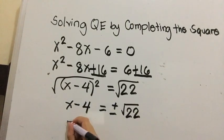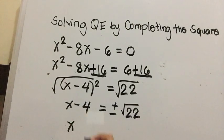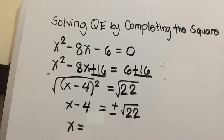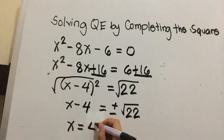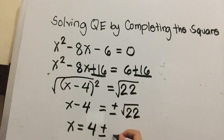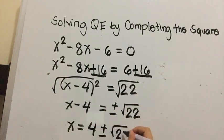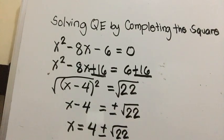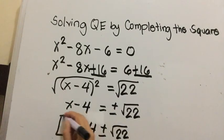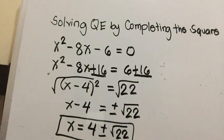The final answer for the value of x is: transpose the value of 4 to get x equals 4 plus and minus square root of 22. This is already the final result since we cannot simplify the square root of 22.